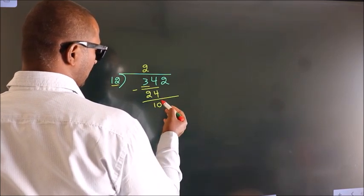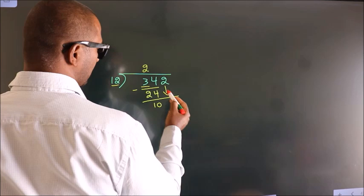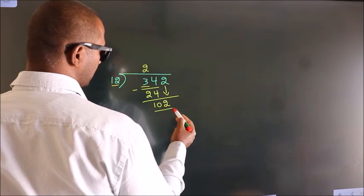After this, bring down the next number. So 2 down. So 102.